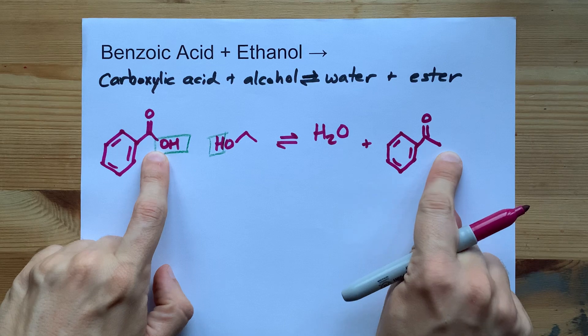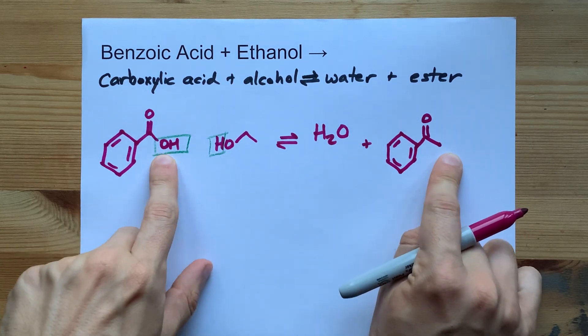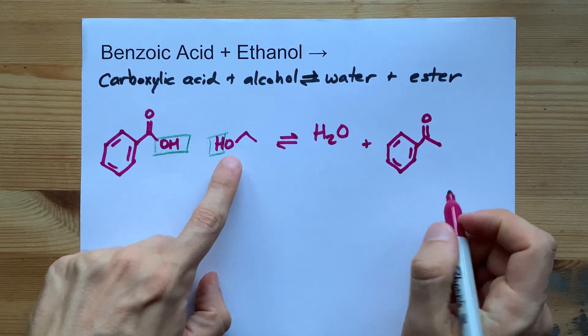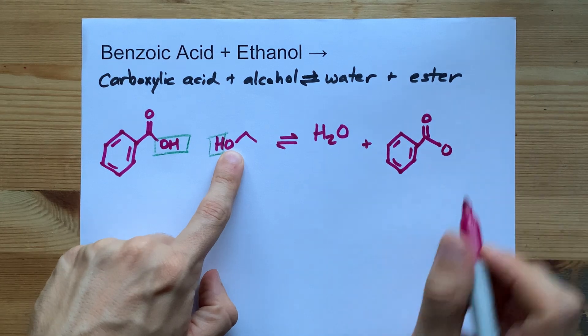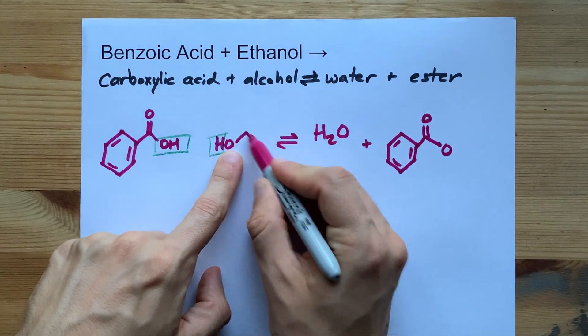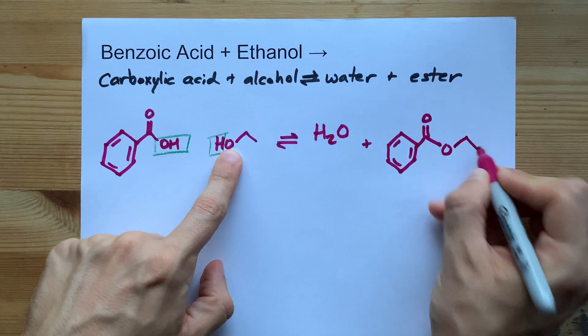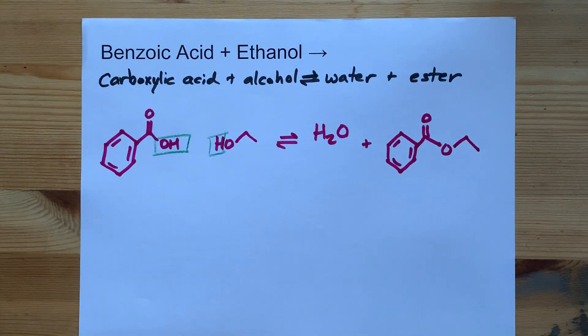Now notice I stopped right at the O from the OH that fell off. What is there now is this O from your alcohol. Whatever is connected to that O remains connected. And that's why you end up with an ester.